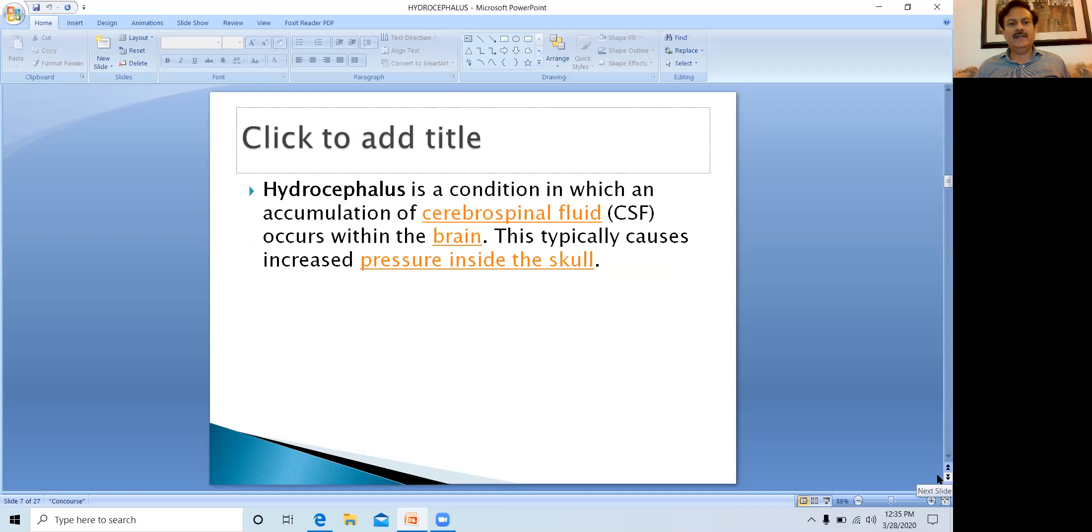This is a condition in which an accumulation of cerebrospinal fluid occurs within the brain, and this typically causes increased pressure inside the skull. When CSF increases, the brain is covered by a bony skull, so the pressure rises inside the skull and there is no relief of the pressure. This can result in various signs and symptoms.